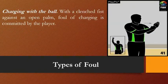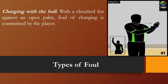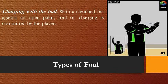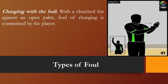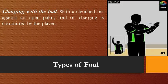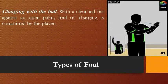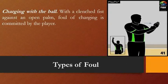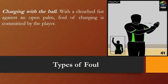Another type of foul is charging with the ball — the offensive foul. This time with a clenched fist against an open palm. Charging is committed by the player who has possession of the ball or is controlling a live ball. The referee immediately raises a hand with a clenched fist followed by an open palm at chest level, and the other arm does a punch into the palm — signaling charging with the ball.